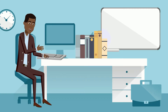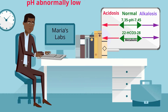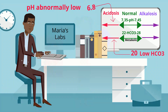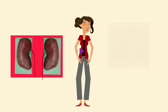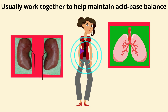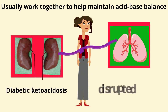You review Maria's charts and notice that her pH is abnormally low at 6.8 and she has a low bicarbonate of 20. The kidneys and the lungs usually work together to help maintain acid-base balance in the body, but her diabetic ketoacidosis has disrupted this balance.